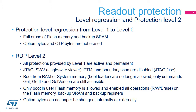Readout protection Level 2 provides the same protection as in Level 1, but the protection becomes permanent. Once the RDP protection is set to this level, there is no way to modify it — no level regression and mass erase mechanism is possible. This level must only be considered in the final product when the development stage is completed. Note that to ensure that there are no back doors, this protection cannot even be bypassed at ST's factory.